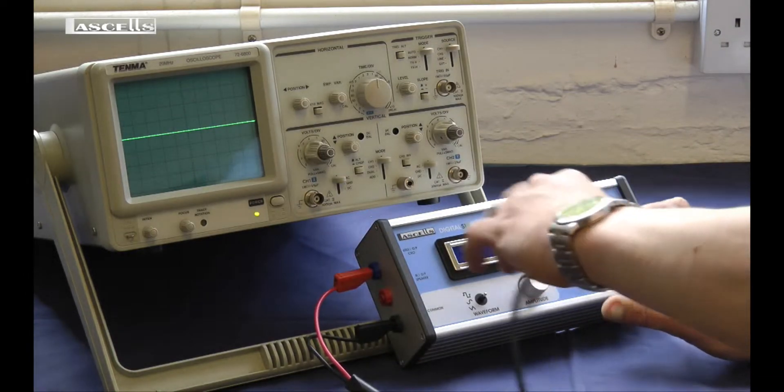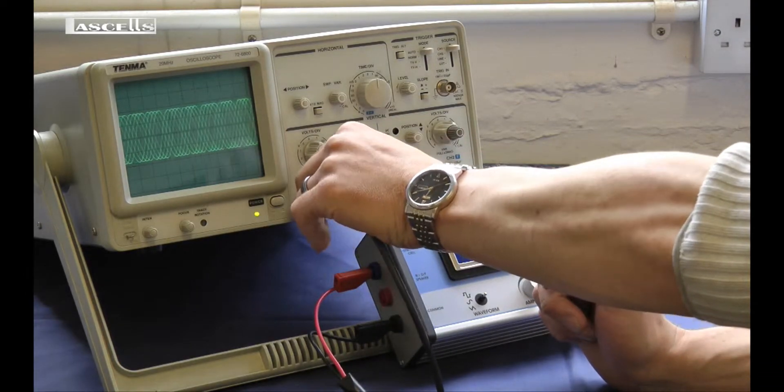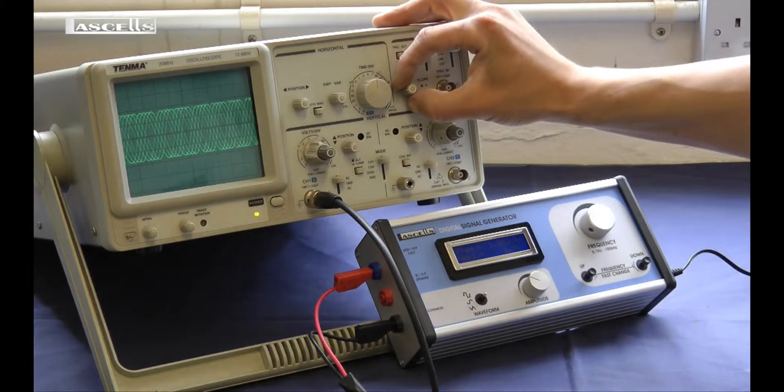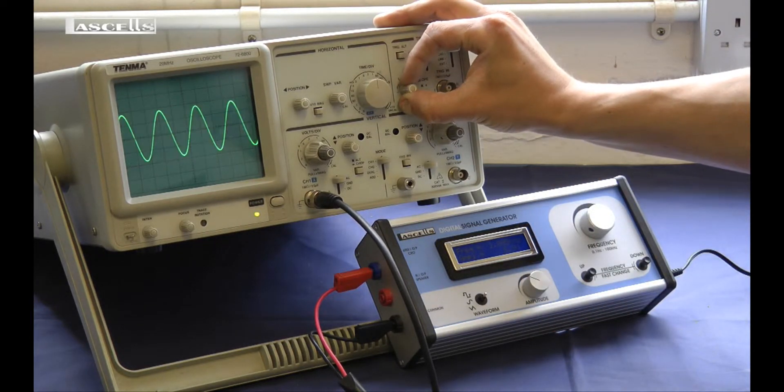Once that's done, we can connect our scope to channel one. There's our trace on the screen. Let's just adjust the trigger, and there we go.